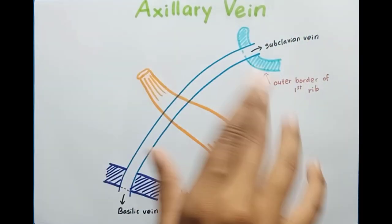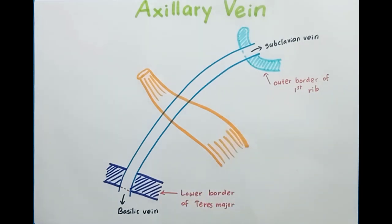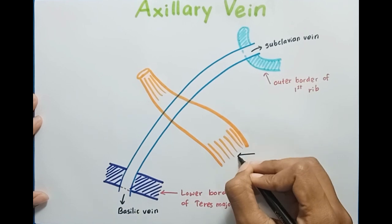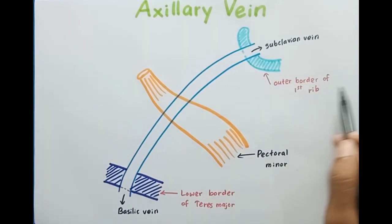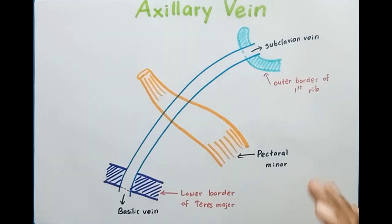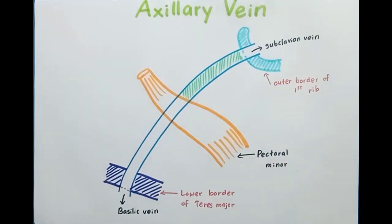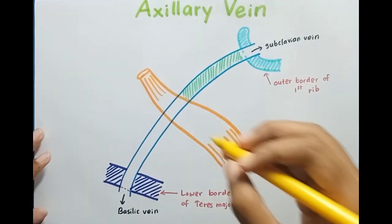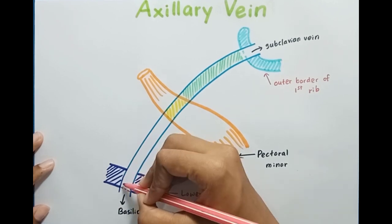The axillary vein can also be divided into three parts according to the pectoralis minor muscle. From the outer border of the first rib to the medial border of pectoralis minor is the first part. Behind the pectoralis minor muscle is the second part. And from the lower border of teres major to here is the third part.